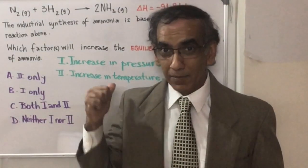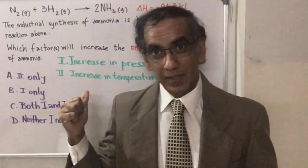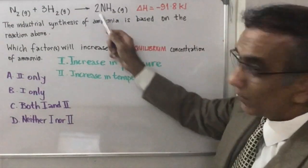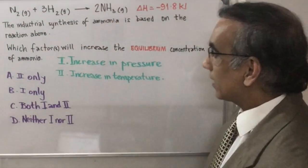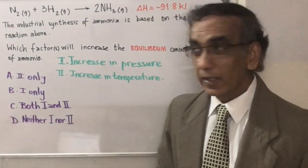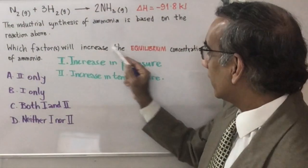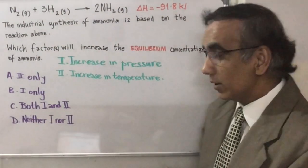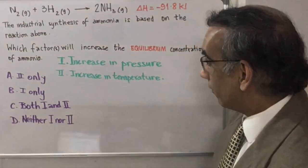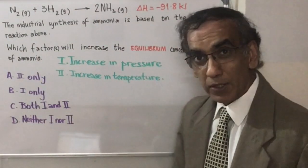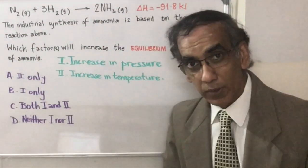Hello and welcome again as we consider another multiple choice question for IB chemistry. Today's question is based on the very familiar Haber process for the manufacture of ammonia. It asks which factors will increase the equilibrium concentration of ammonia, and here you have the two factors: increase in pressure and increase in temperature.